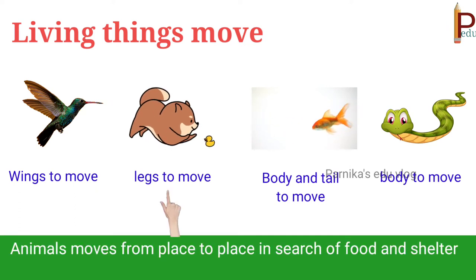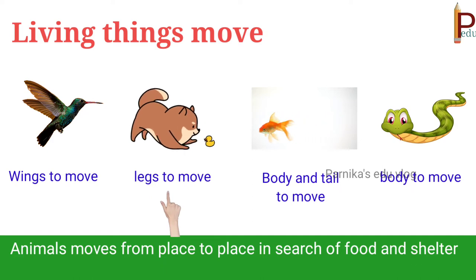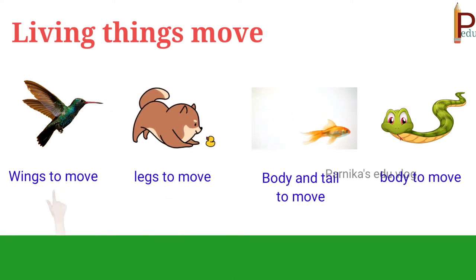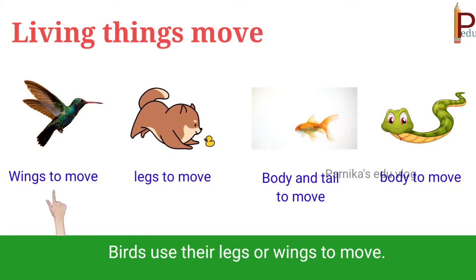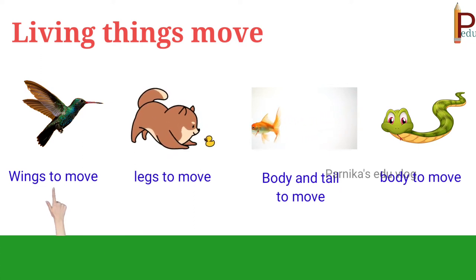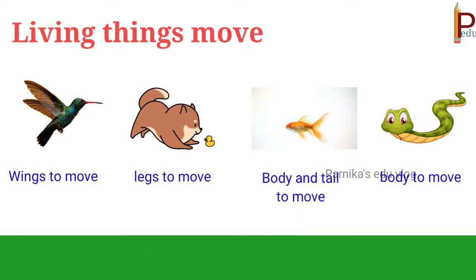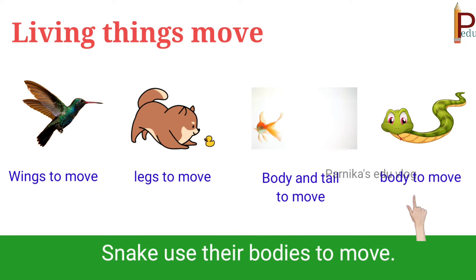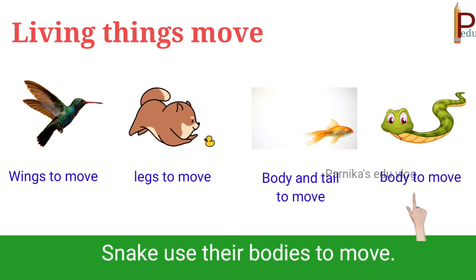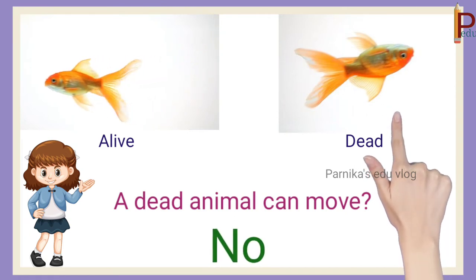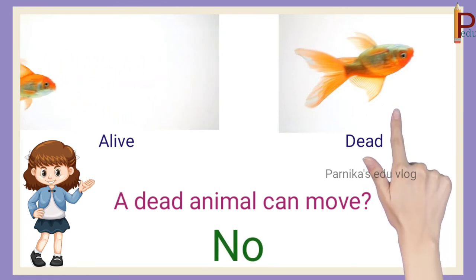Living things move. Children, see the picture shown here. Animals move from place to place in search of food and shelter, or to escape from their enemies. Birds use their legs or wings to move. Fish use their body and tail to move. Snakes use their bodies to move.